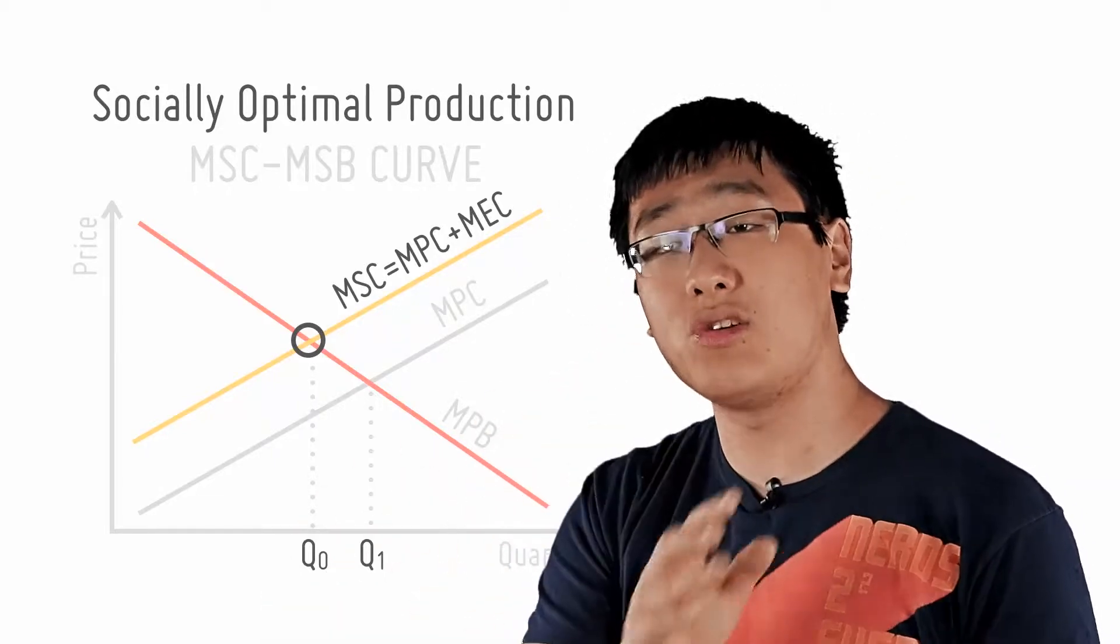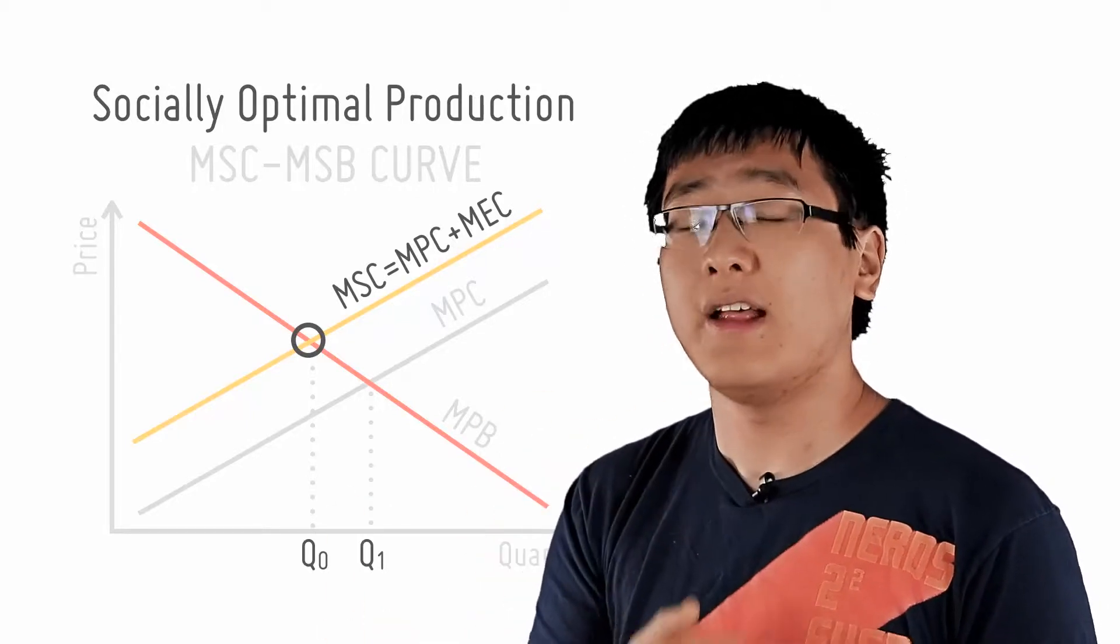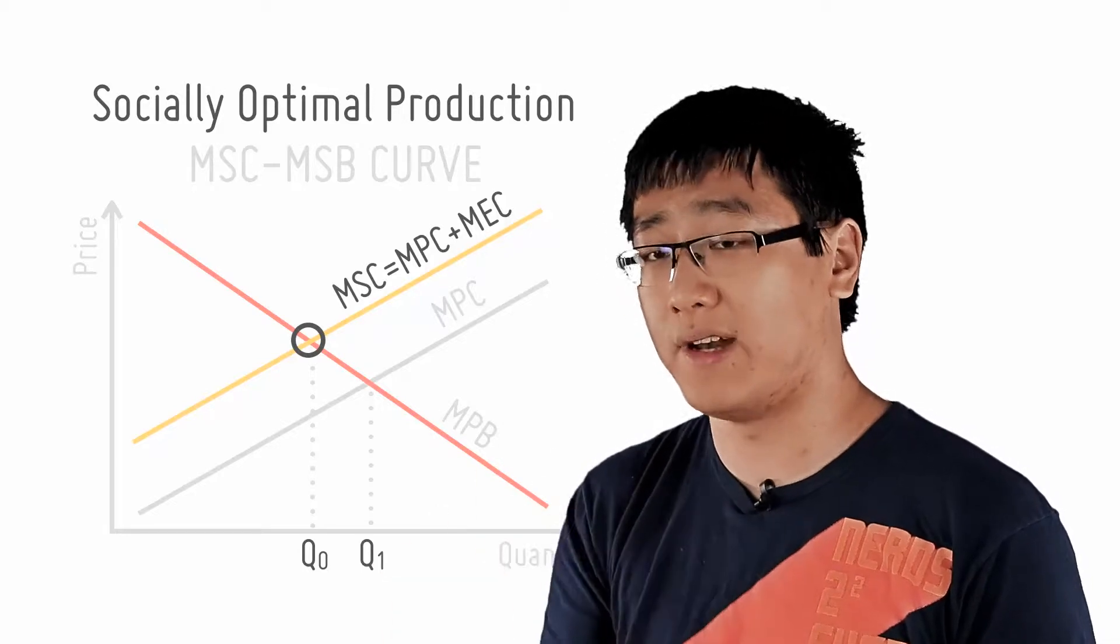Hence, production should be at Q0 instead of Q1. Q0 is allocatively efficient and it is the socially optimal production level.